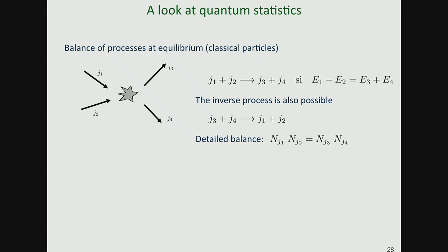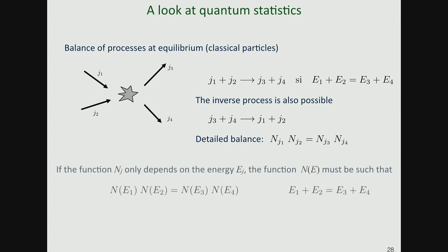At equilibrium I have a detailed balance condition: classically, this process has the same rate as the reverse, therefore n(g1)·n(g2) = n(g3)·n(g4) whenever the four energies satisfy energy conservation. If I assume that n(j) depends only on the energy of state j, then the function n(e) must satisfy n(e1)·n(e2) = n(e3)·n(e4) whenever e1+e2 = e3+e4.